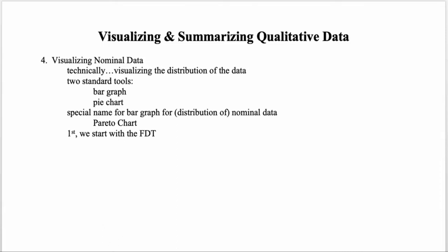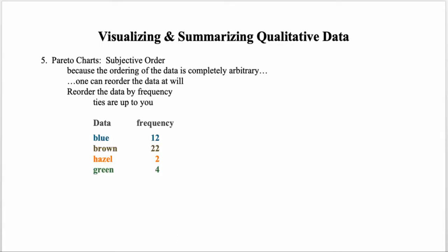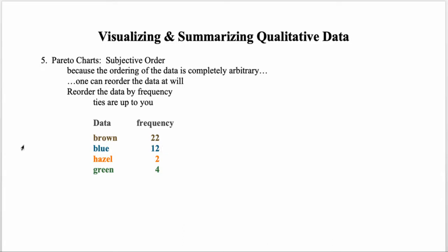The key to a Pareto chart is that it takes advantage of the fact that nominal data has a subjective order. Because the values are just names, there's no completely objective way to put them in order — which allows us to order the data in any fashion we prefer. Here, we reorder the data by frequency: since brown is the most frequently occurring value, we put that first; since hazel is the least frequent, we put that last.